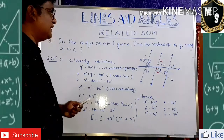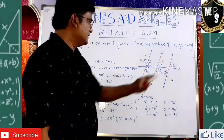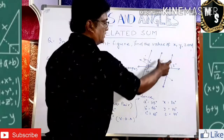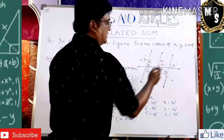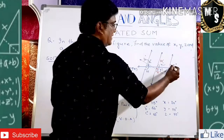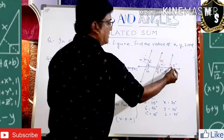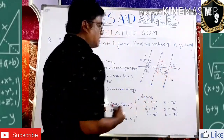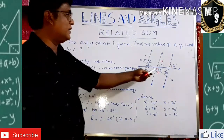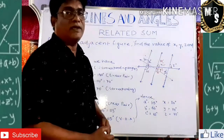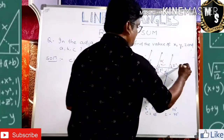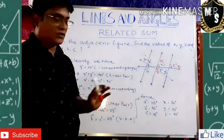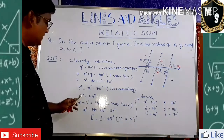Next, z equals x because z and x are corresponding angles (the lines are parallel and this is the transversal). Since x is 70 degrees, z is also 70 degrees.